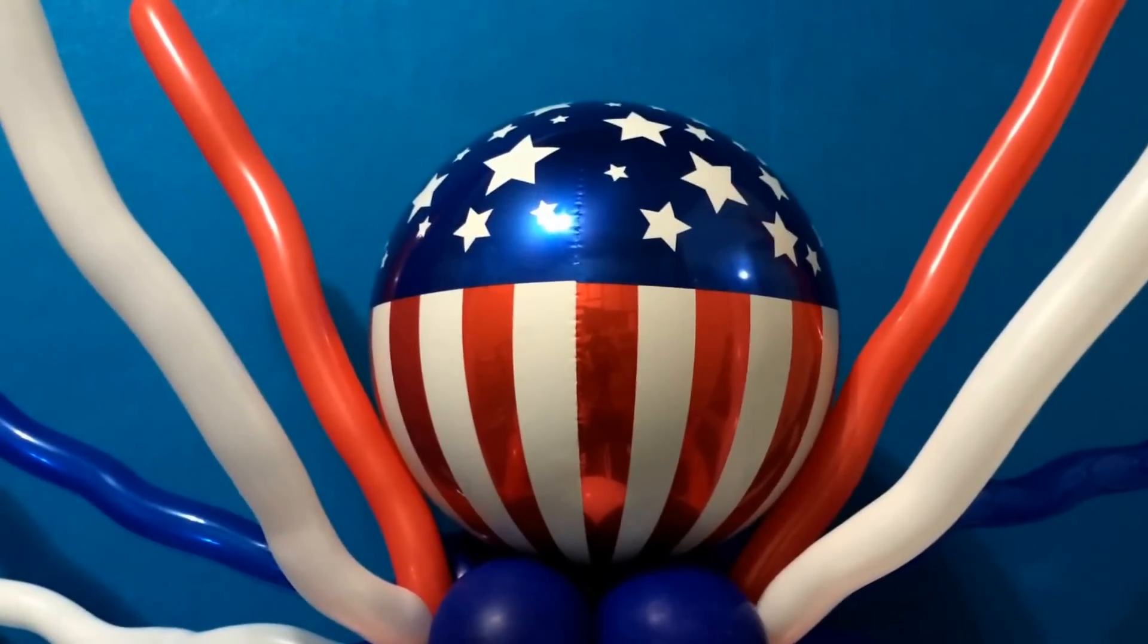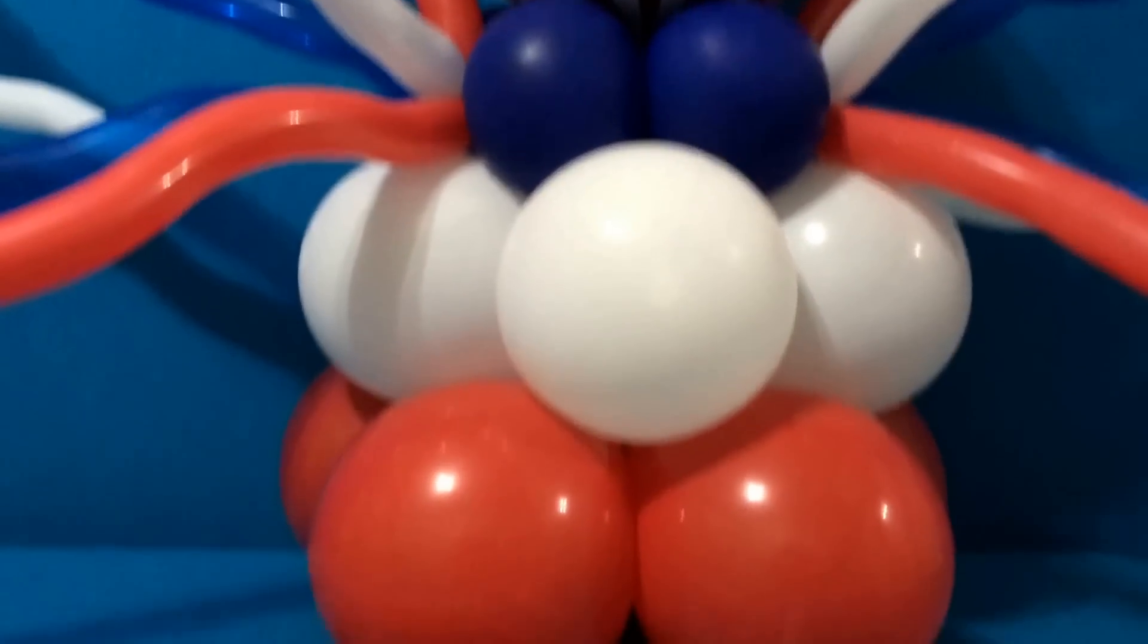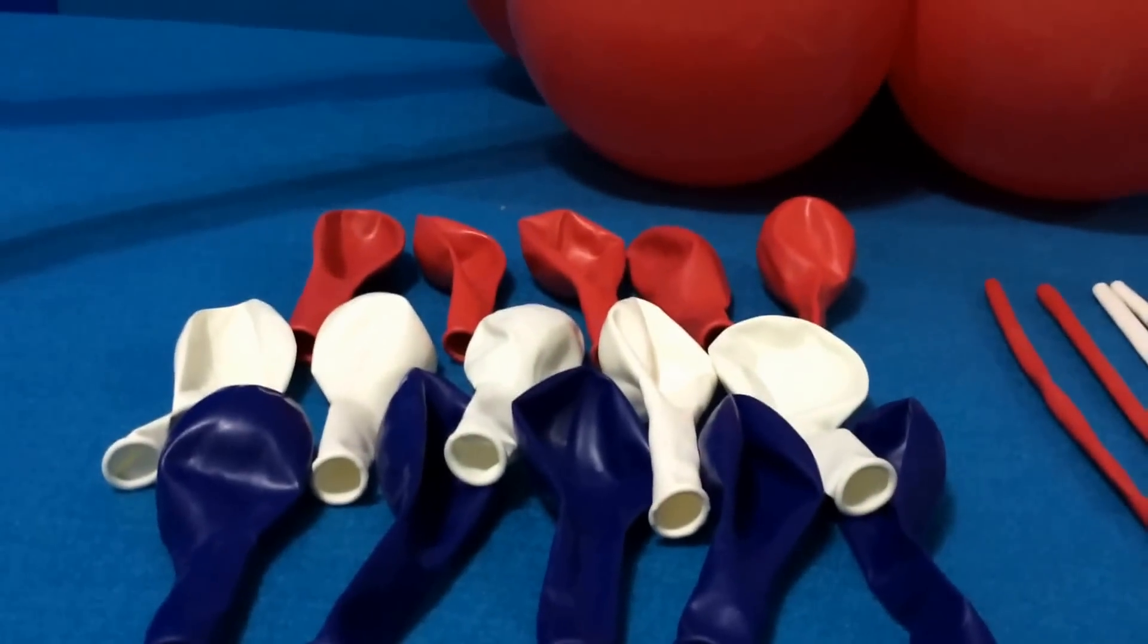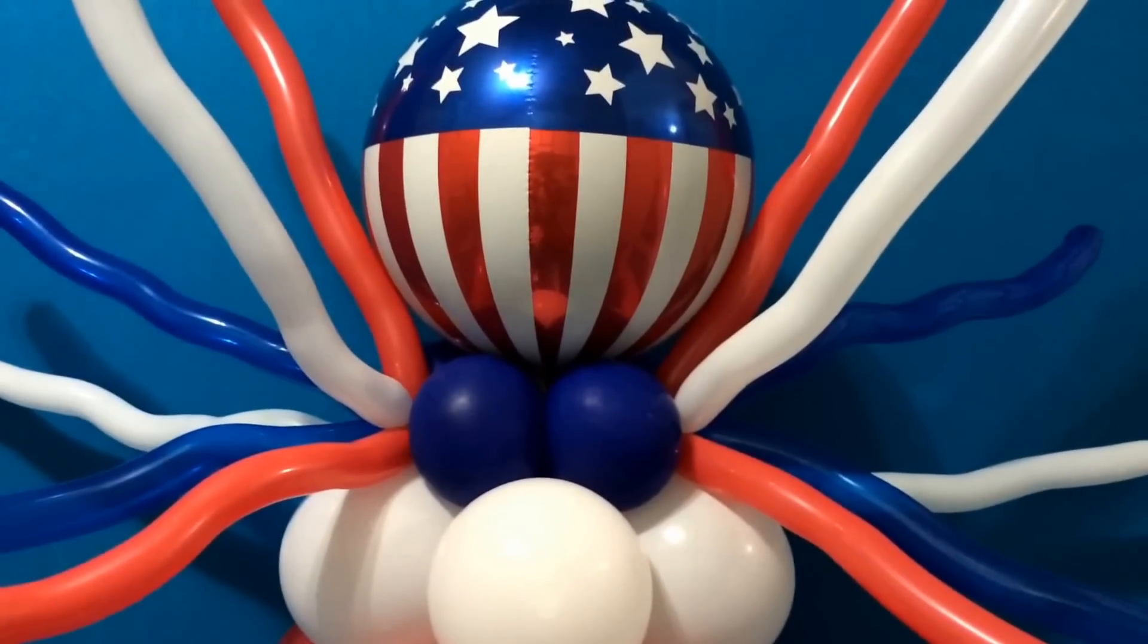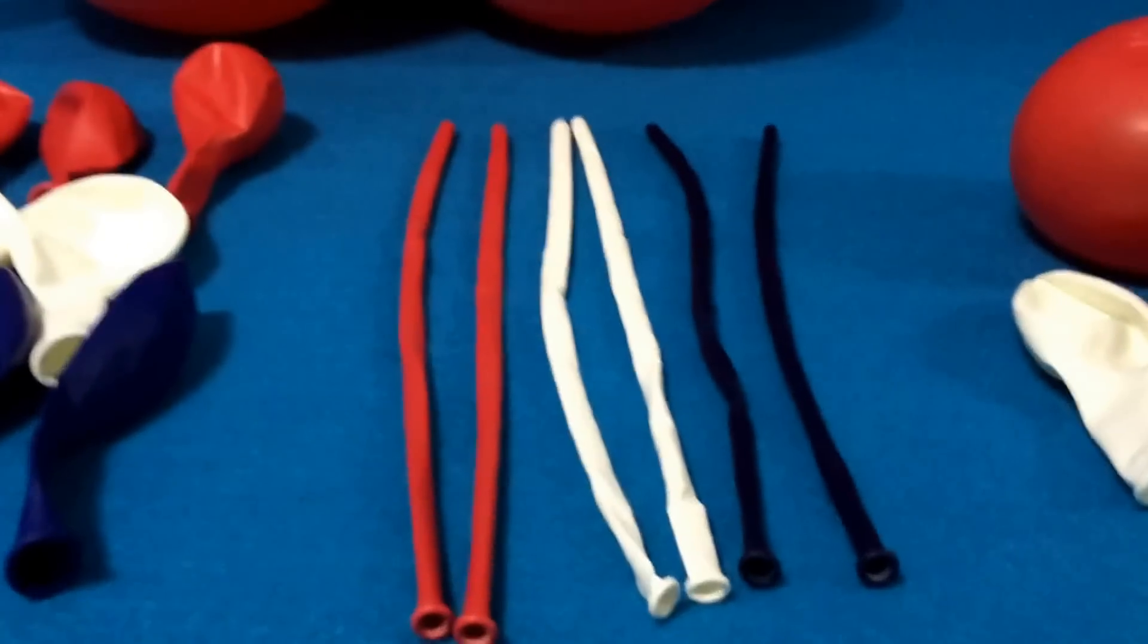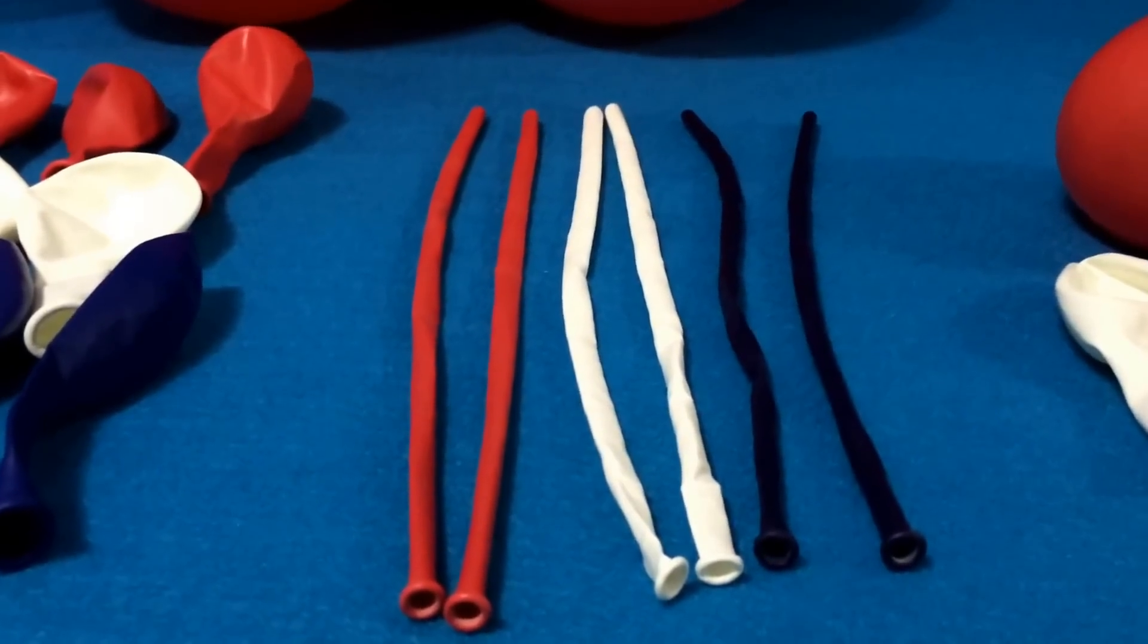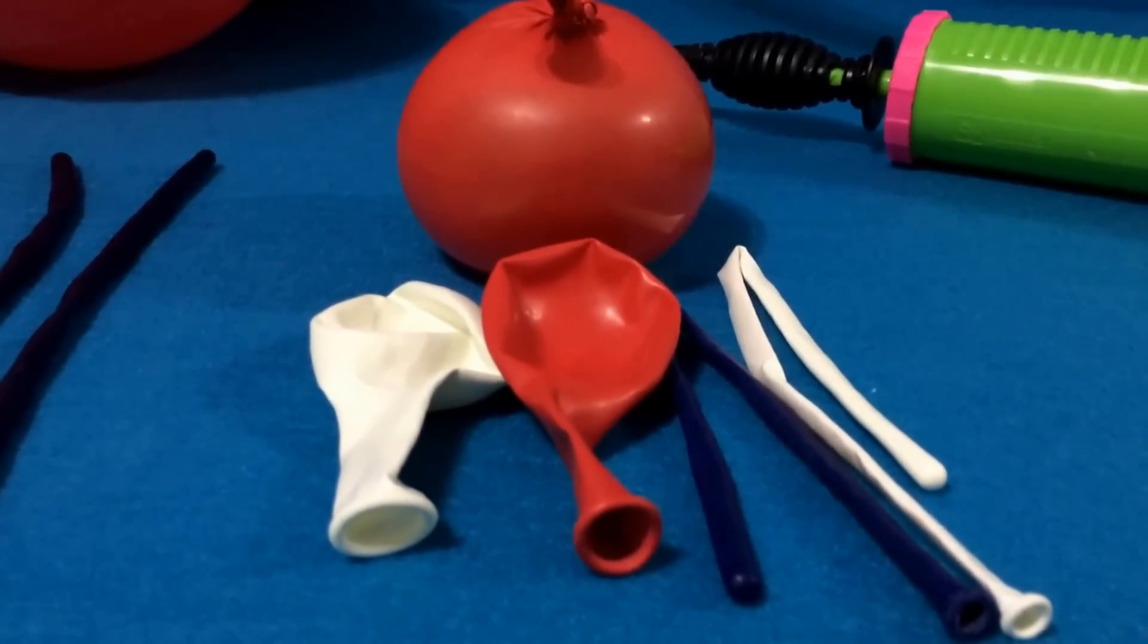Topped with an Orbs Patriotic Mylar Balloon, the structure itself is comprised of 15 11-inch round balloons, five of each color. The swirly exploding effect is evocative of bursting fireworks in the night sky, and is easily formed from six complementary 260s. Also, make sure you have some spare rounds and 260s for the construction process.